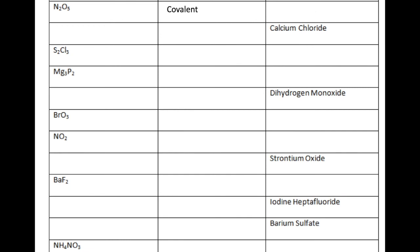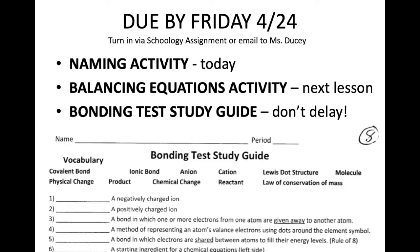I'm going to conclude this and let you jump into the activity. Log on to Google Meets when you have questions and to check your answers. Before you go, a little overview for the rest of the week: today you're turning in this naming activity. The next lesson I see you, you're going to do a balancing equations activity. Due by the end of the week — since this is the end of our unit — you need to complete the bonding test study guide, worth 15 points in your home learning category. Don't delay until Friday. You should be able to work through most of the vocabulary and a good chunk of the first questions before we go over the last lesson of this unit.